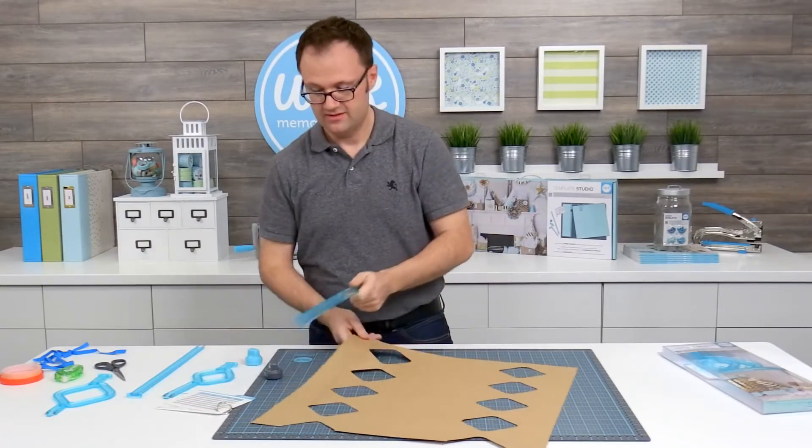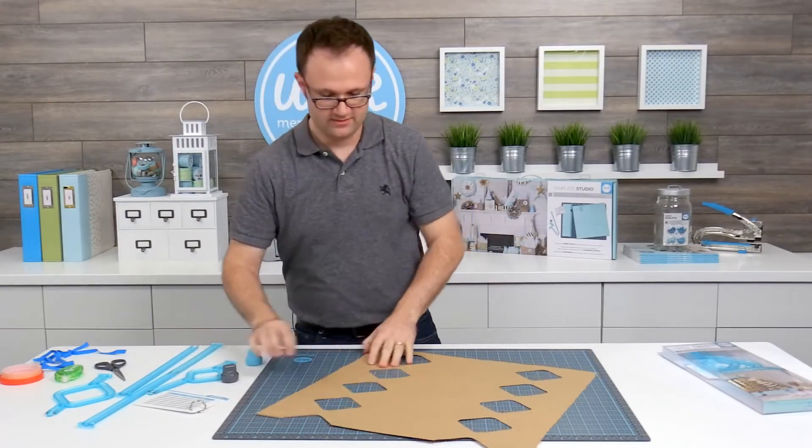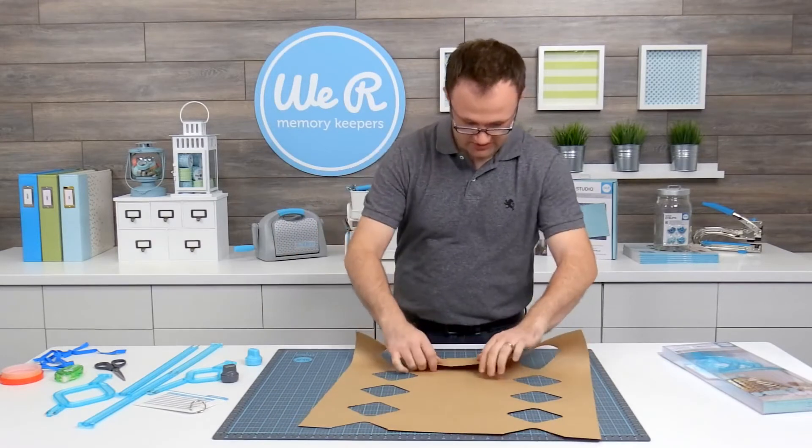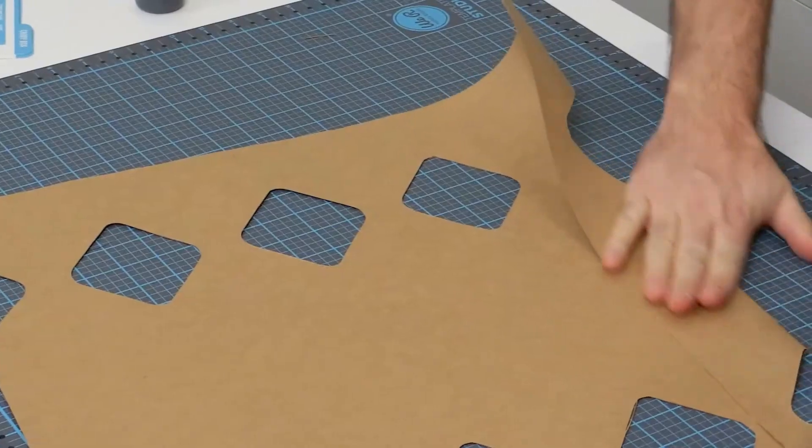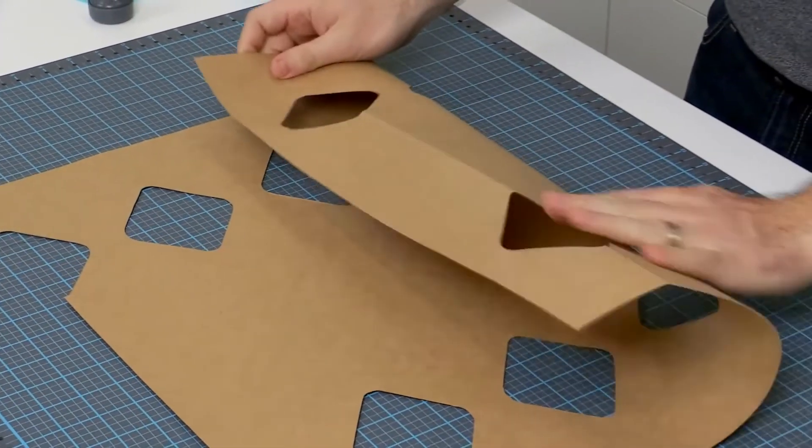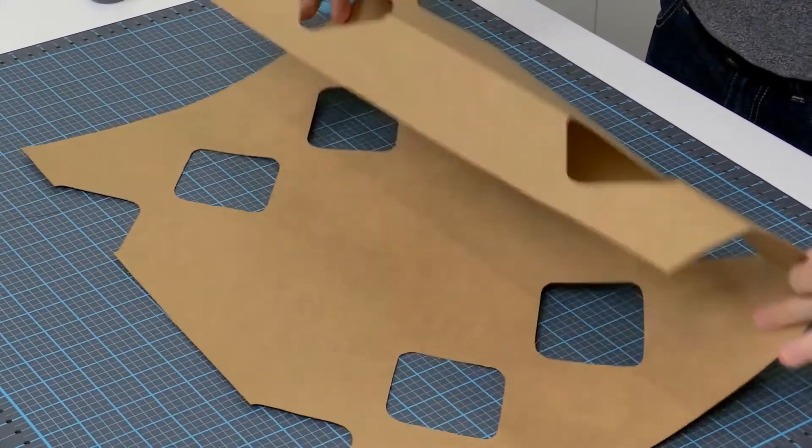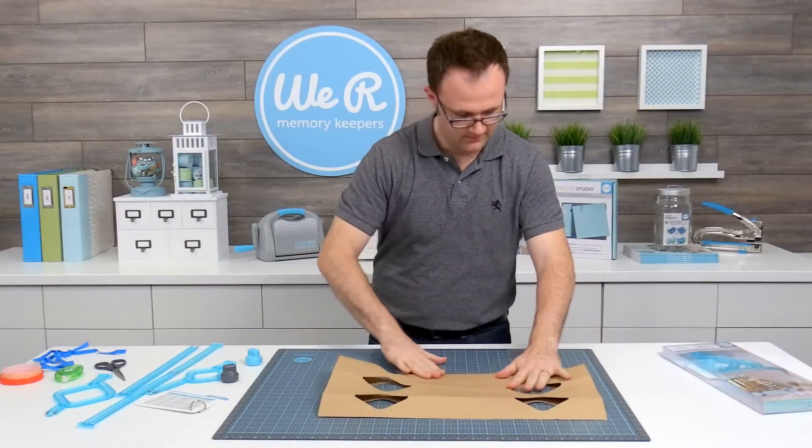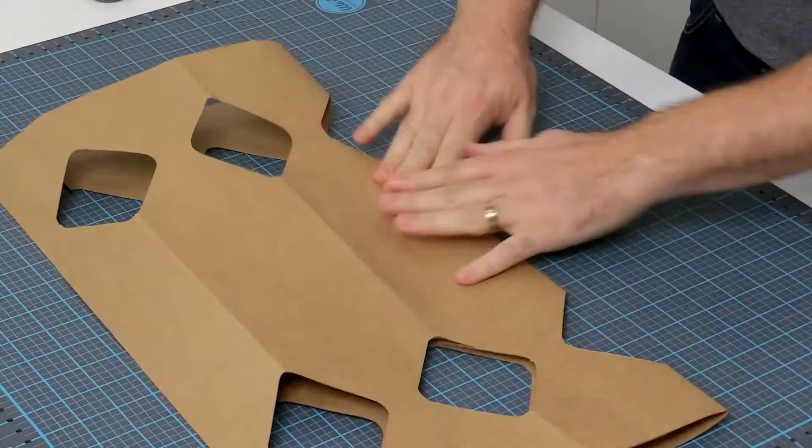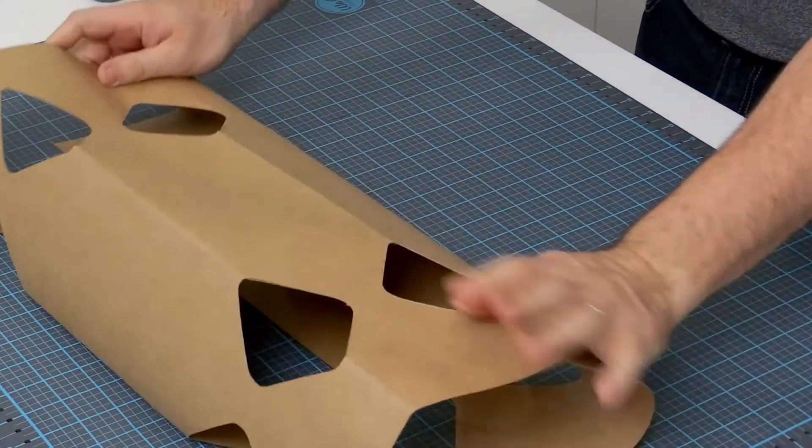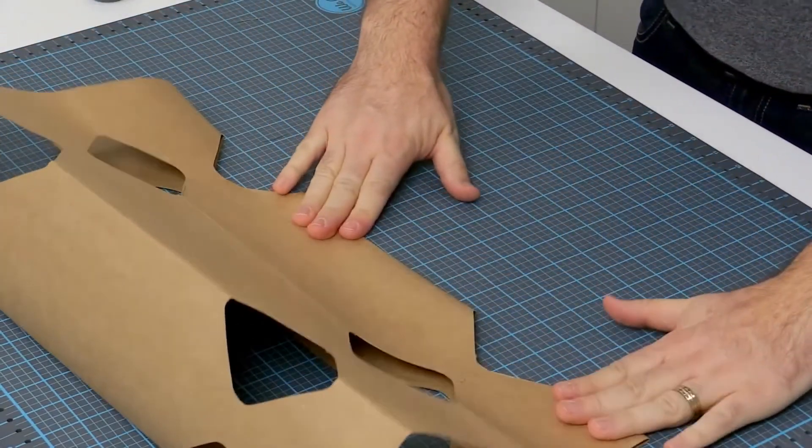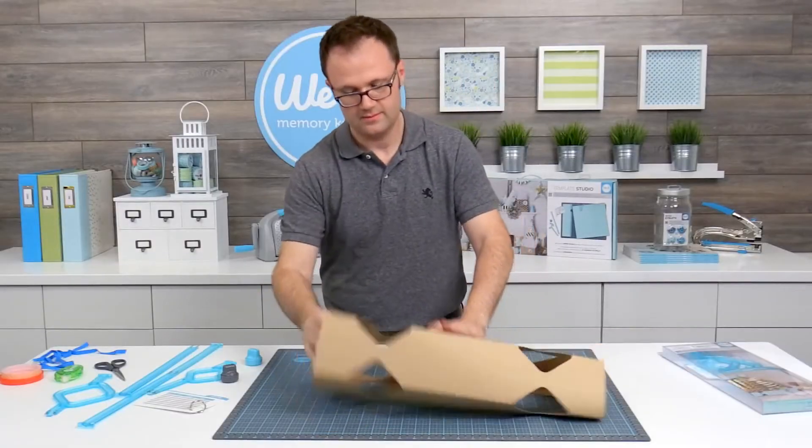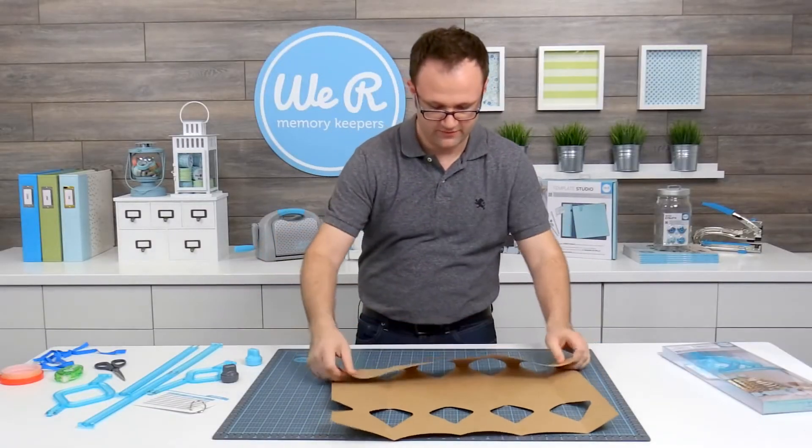All right. Now we are ready to start assembling. What you're going to do is you're going to fold along all of your score lines and fold along these.